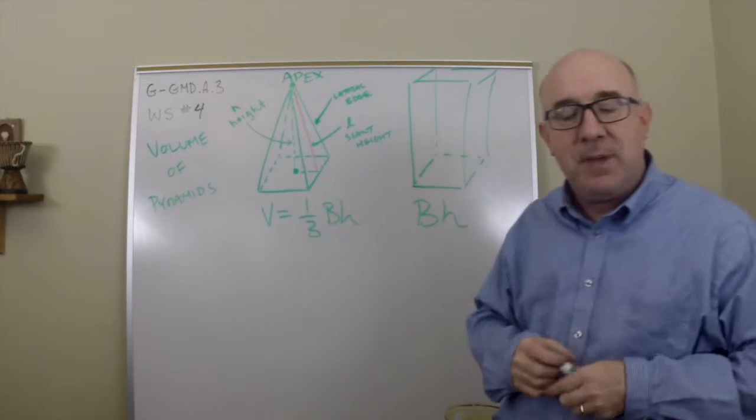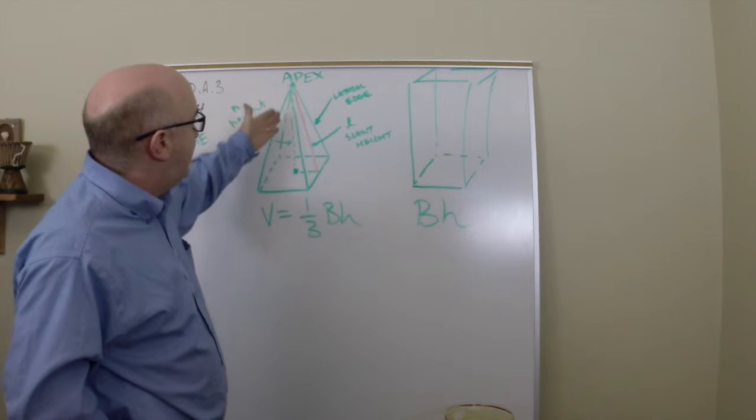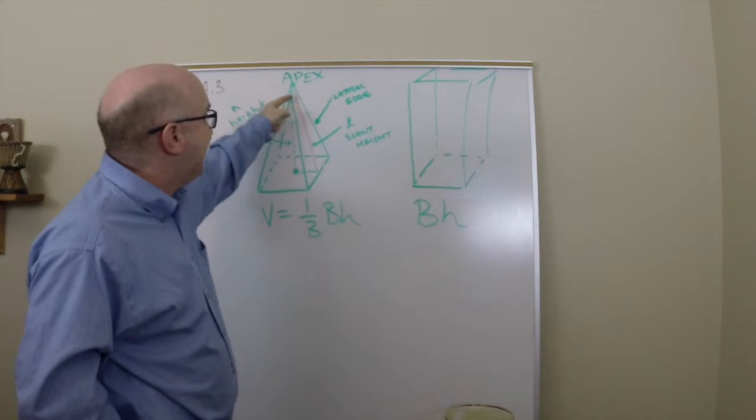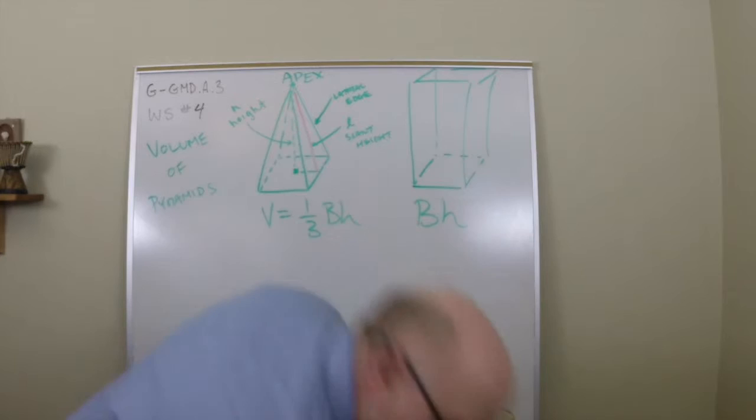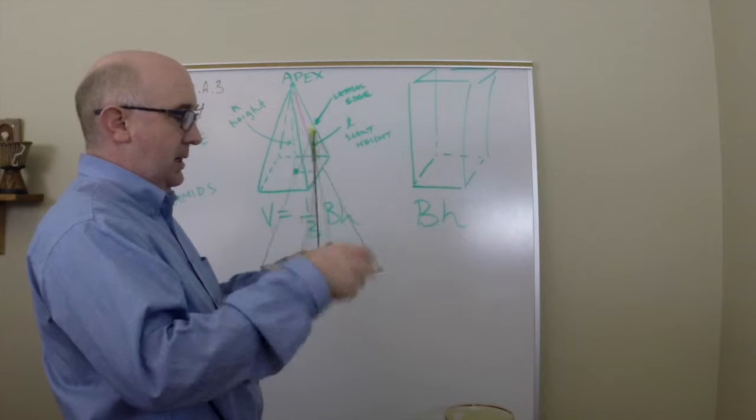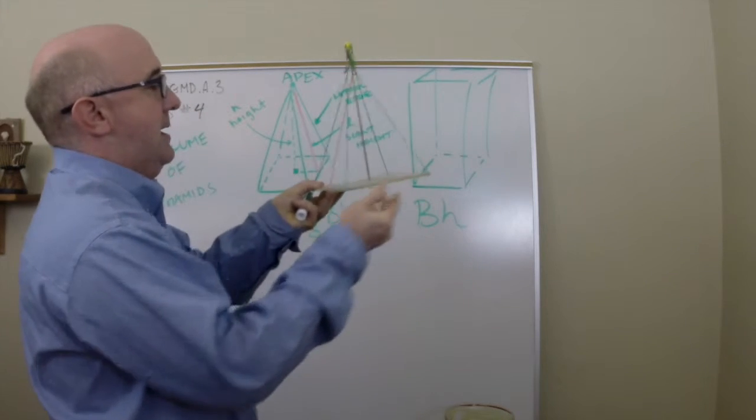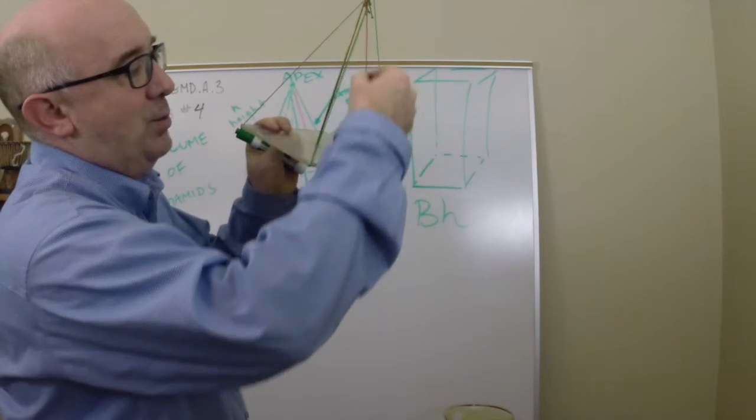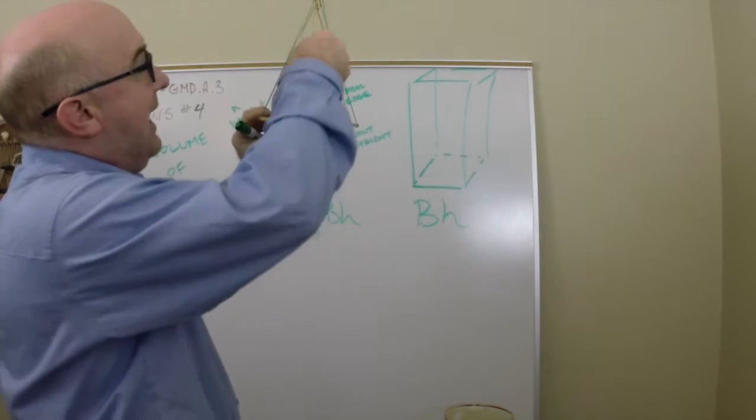You just calculate it just like it's normal and then divide by three because you know it's a third of the prism that would enclose it. The last thing, and then we'll just do some calculations: there's a couple important items here. We talk about the height of the pyramid, we talk about the slant height. This red line is out in the face of the pyramid. Let me quickly show you what I mean by that.